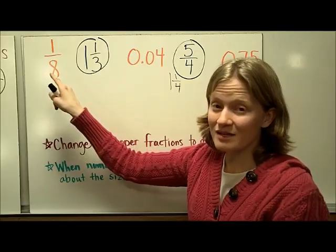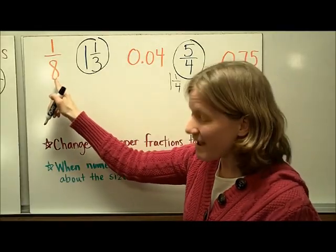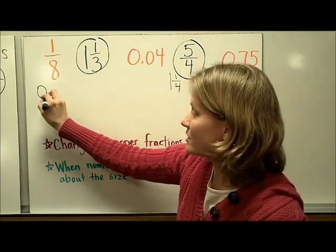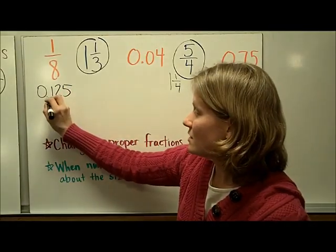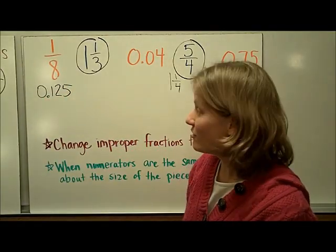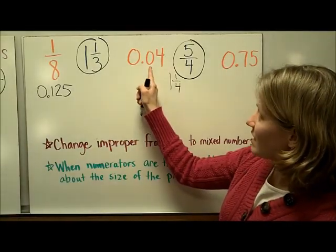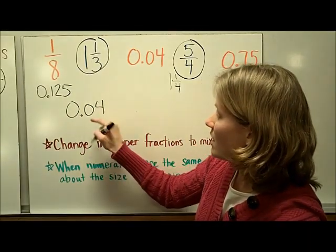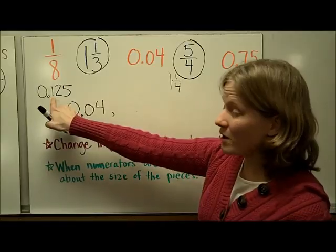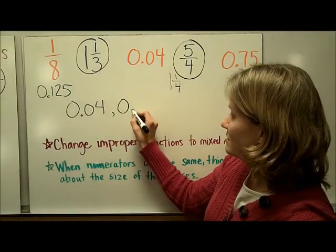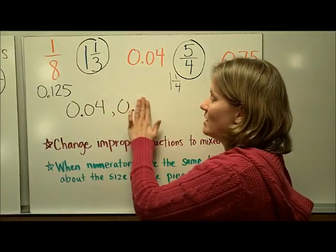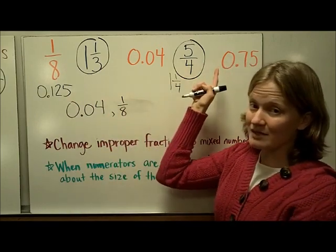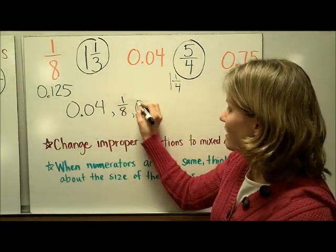I know one eighth, and I want a decimal, so let's change this into a decimal. An eighth is like half of a quarter. A quarter was 25 cents, so half of a quarter is 12 and a half cents — that's 0 and 125 thousandths. Now I can compare them. This one has a zero in the tenths place, so that's the smallest: zero and four hundredths. Next, this one has a one in the tenths place — so that's the next biggest, written as one eighth, what I started with. Then the only other one less than one whole is zero and 75 hundredths.